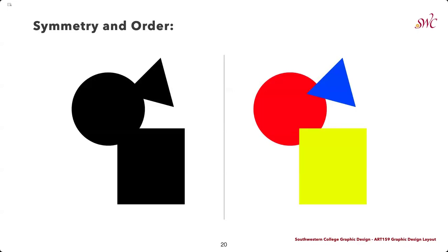Symmetry and order: this principle says that your brain will perceive ambiguous shapes in as simple a manner as possible. Your brain will interpret the image on the left as a rectangle, a circle, and a triangle even when the outlines of each are incomplete, because those are the simpler shapes in the overall image.